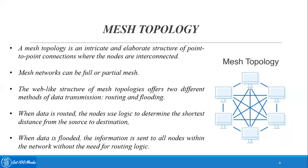When data is routed, the nodes use logic to determine the shortest distance from source to destination. The network will automatically find the shortest route to reach from system A to system B. When data is flooded, the information is sent to all nodes within the network without the need for routing logic. When sharing information with all systems, we use flooding; when logical point-to-point sharing is required, we use routing.